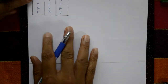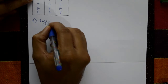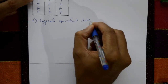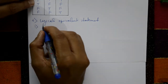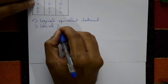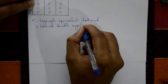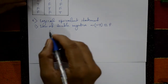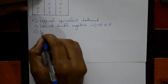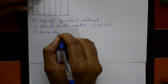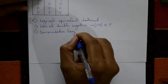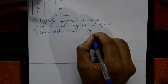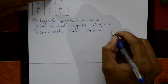Sixth one: logical equivalent statements. Some laws are there. First: law of double negation — negation of negation of P is equivalent to P only. Second: commutative law — P disjunction Q is equivalent to Q disjunction P.